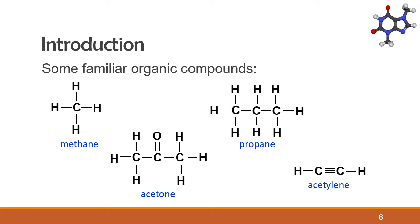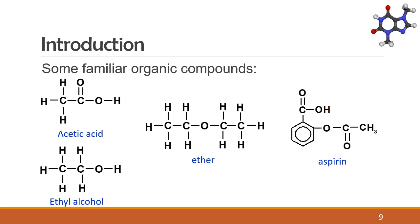Here are some organic compounds that may already be familiar to you — they were introduced in previous modules on Lewis structures. We have methane, acetone, propane, and acetylene. We also have acetic acid, ethyl alcohol, ether, and aspirin.